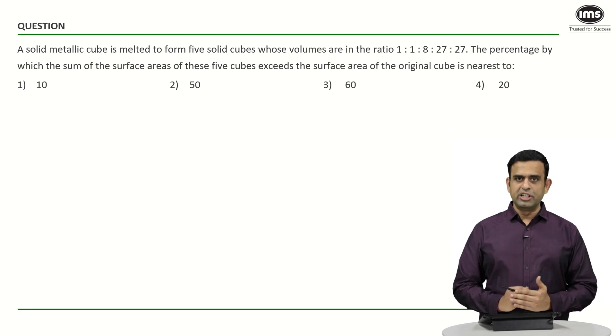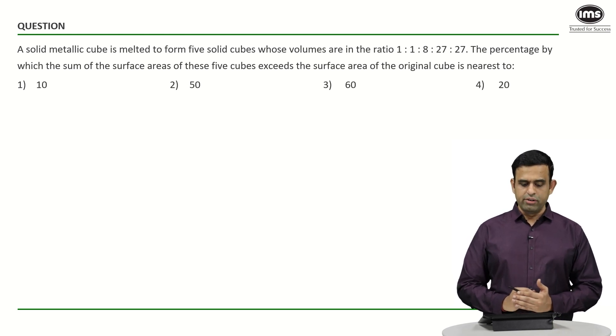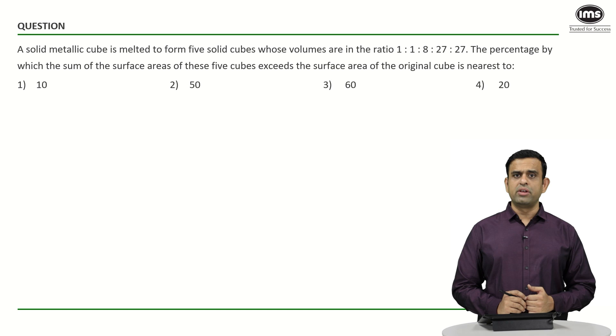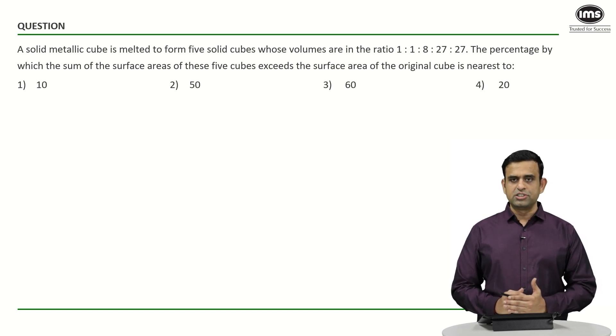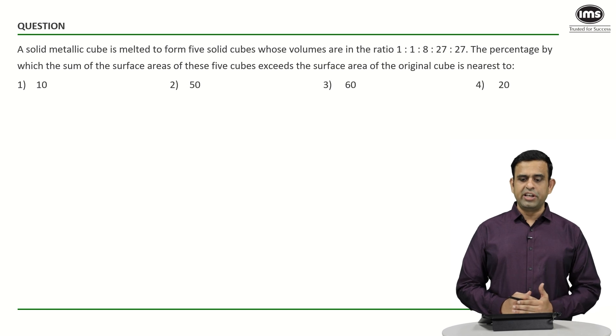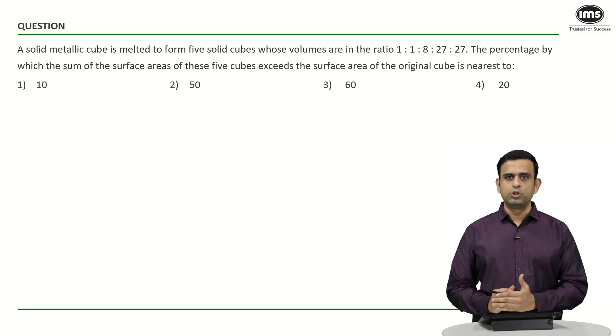A solid metallic cube is melted to form five solid cubes having volumes in the ratio 1:1:8:27:27. The percentage by which the sum of the surface areas of these five cubes exceeds the surface area of the original cube is nearest to: